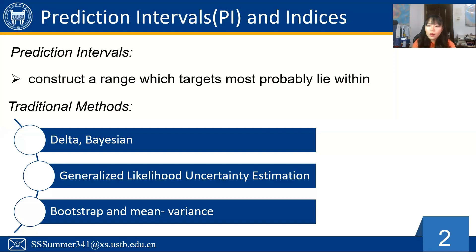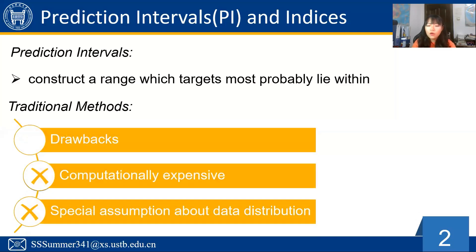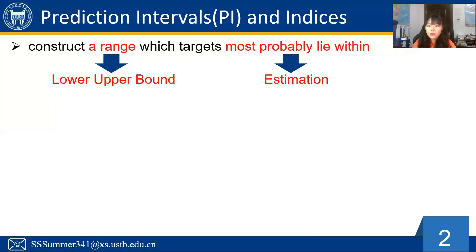However, these are not widely applied to real-world problems due to some drawbacks. For instance, updating the Jacobian and Hessian matrix for each parameter during each iteration can be extremely computationally expensive. Additionally, spatial assumptions about data distribution also contribute to implementation difficulties. The LUBE method is proposed to handle these problems by developing a feed-forward neural network with two outputs to directly generate the upper and lower bounds of PIs. It makes no assumption about the data distribution and avoids the calculation of derivatives such as the Jacobian matrix and Hessian matrix.